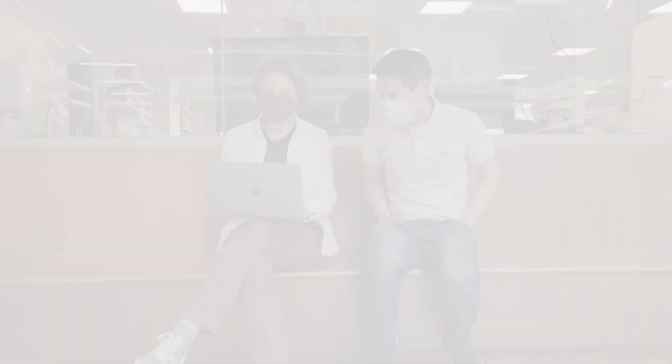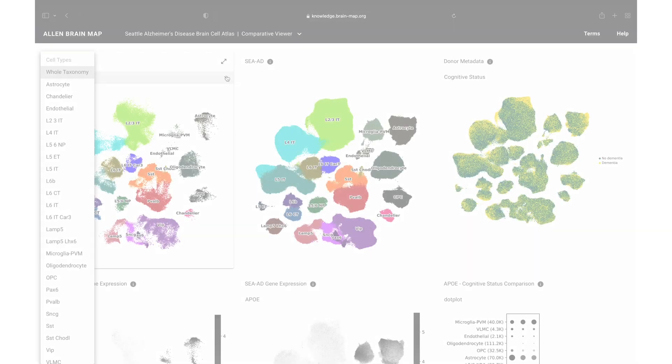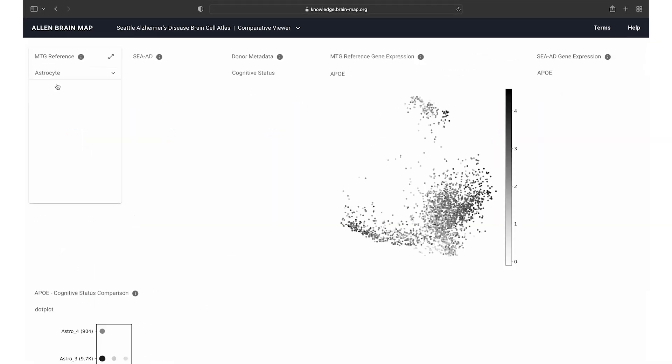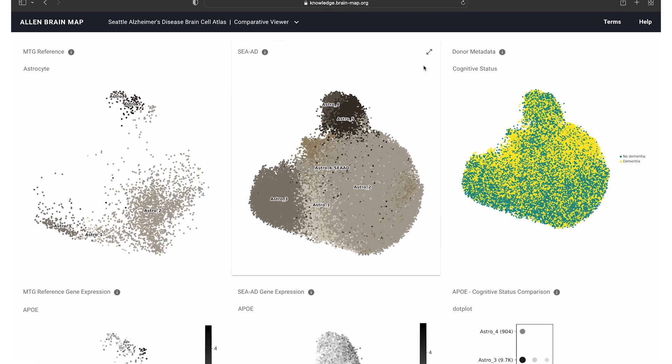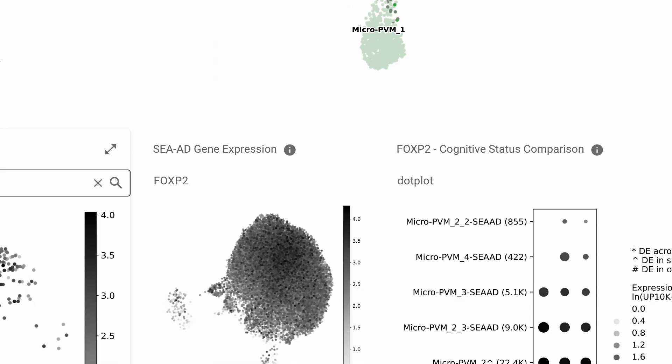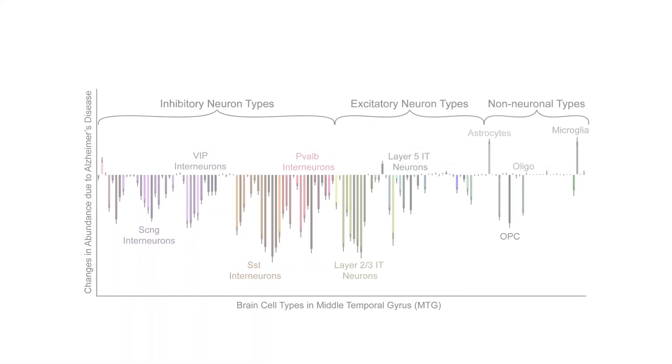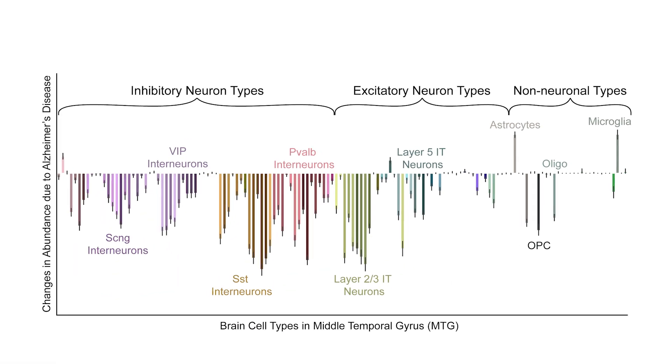The beauty of the current approach is that we rely so much on these so-called omics techniques, where we get a molecular definition of the cells. We know what they look like. We know what their properties are. We know what genes they express. We know what proteins they express.